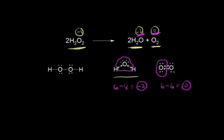Now let's do the hydrogen peroxide example. We draw in our electrons in these bonds. Let's consider the oxygen on the left. Oxygen versus hydrogen — oxygen is more electronegative, so oxygen gets those electrons. Over here, the two electrons between those oxygen atoms have equal electronegativity, so each oxygen gets 1. And so you can see that is our situation.